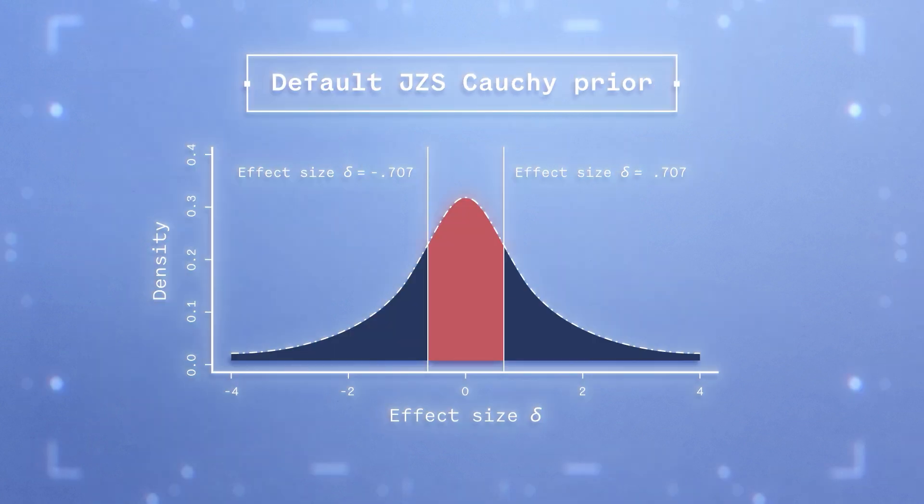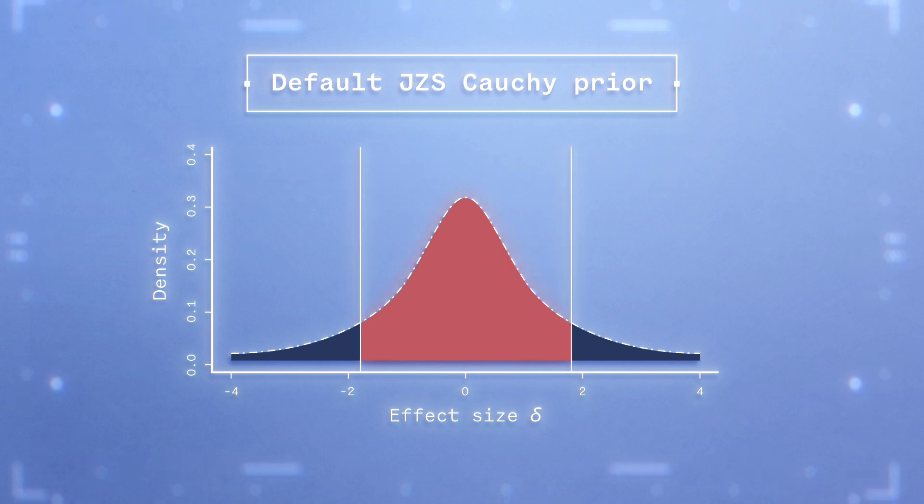Here is the intuitive explanation. Higher values on the scale parameter mean that the prior puts increasingly more weight on bigger effect sizes. Thus, the higher the scale parameter, the more observing a small effect size will be compatible with the prediction under the null hypothesis than with the prediction made under the alternative hypothesis.